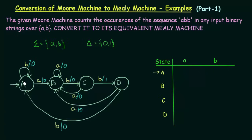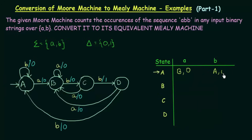Come to state A. A on getting input small a goes to B, and the output associated is 0. Then on input small b, A goes to A itself, and the output associated to this small b is 0. So we give output 0 associated to this transition.